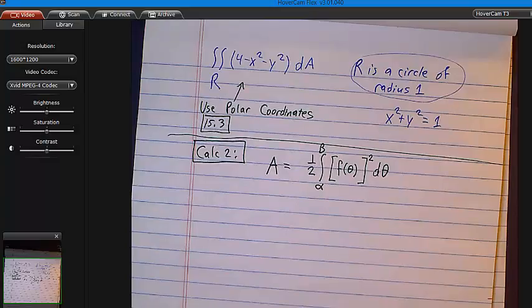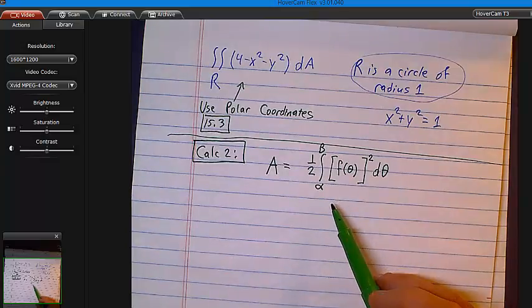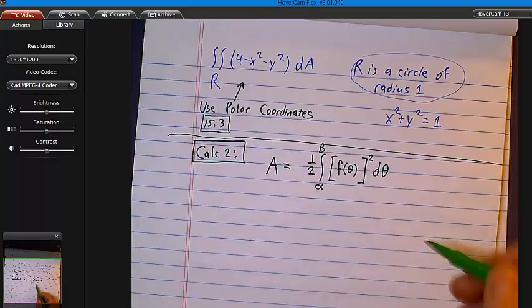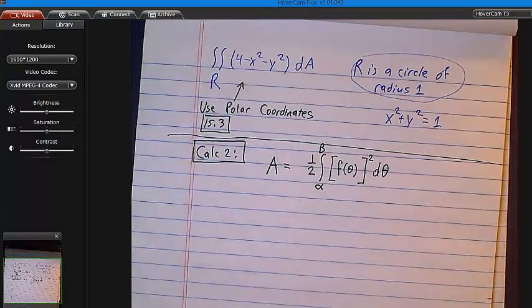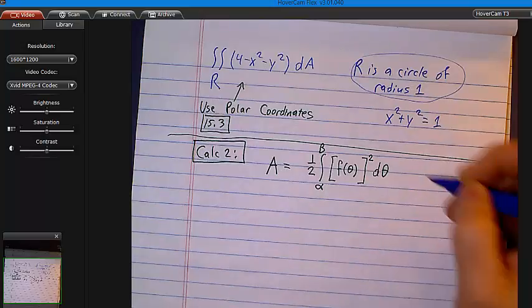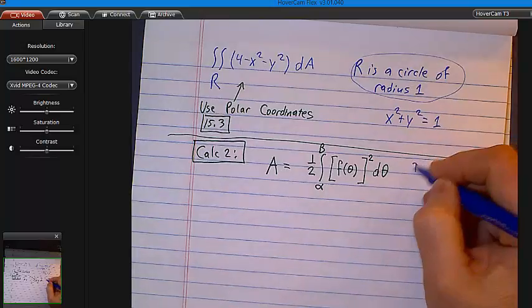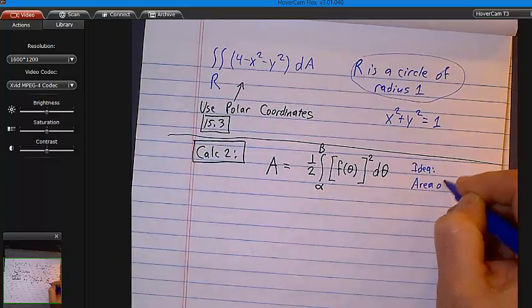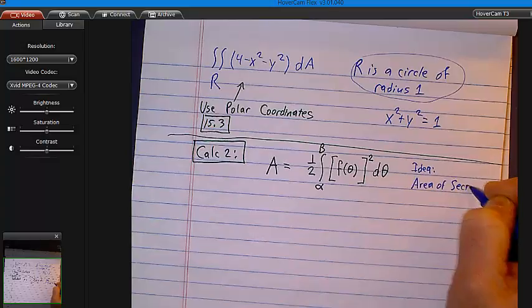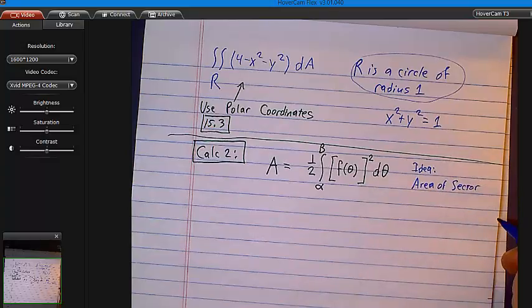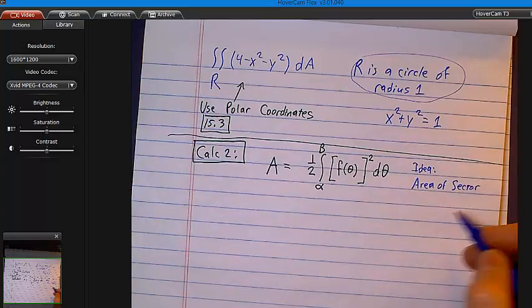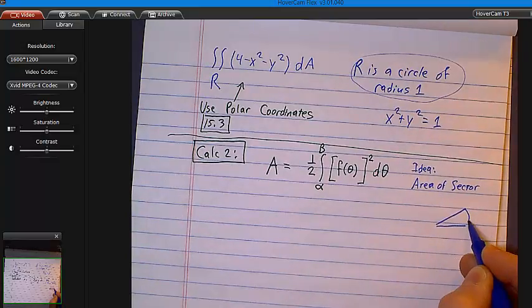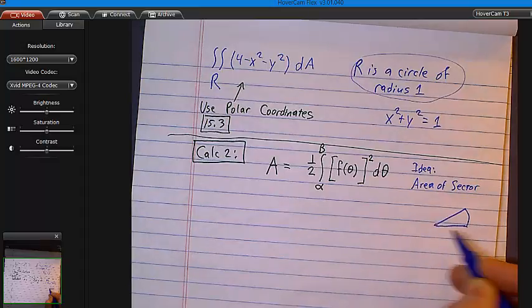And so, what you do then is you integrate, do you remember what it is you integrate? It's a function of theta squared, and then you put a one-half out front. One-half f of theta squared. This was the formula in Calc 2 that you probably made sure you knew for some test.